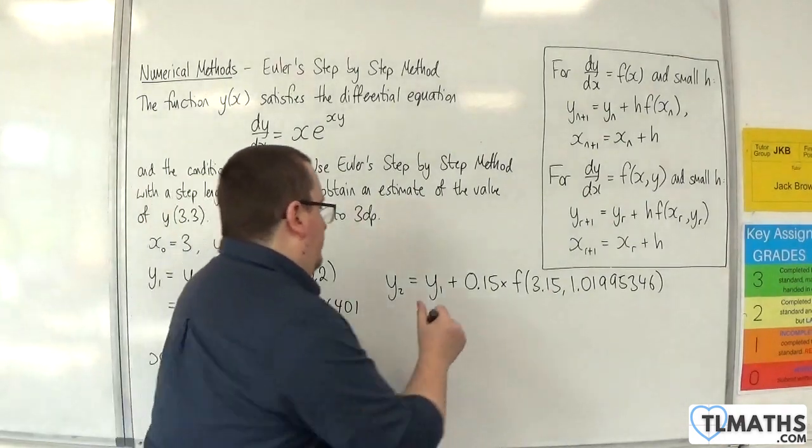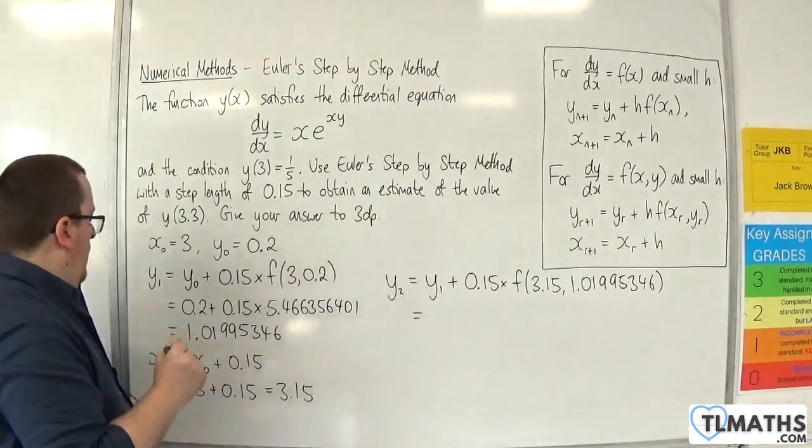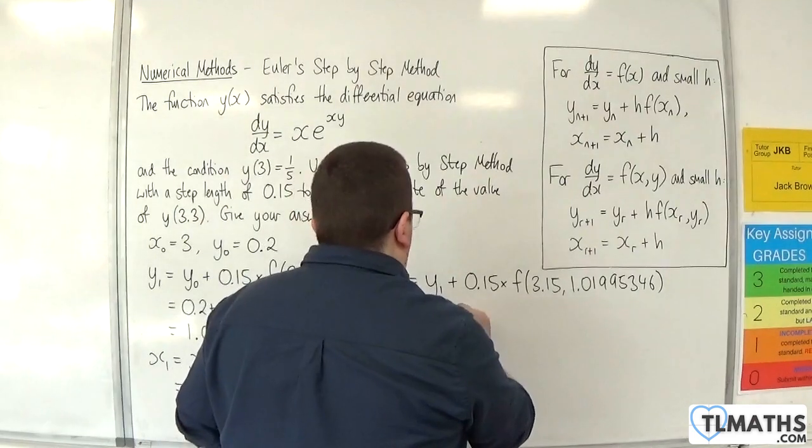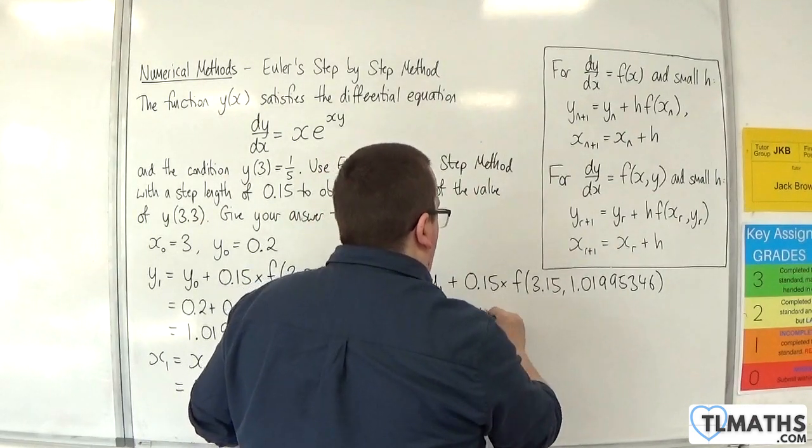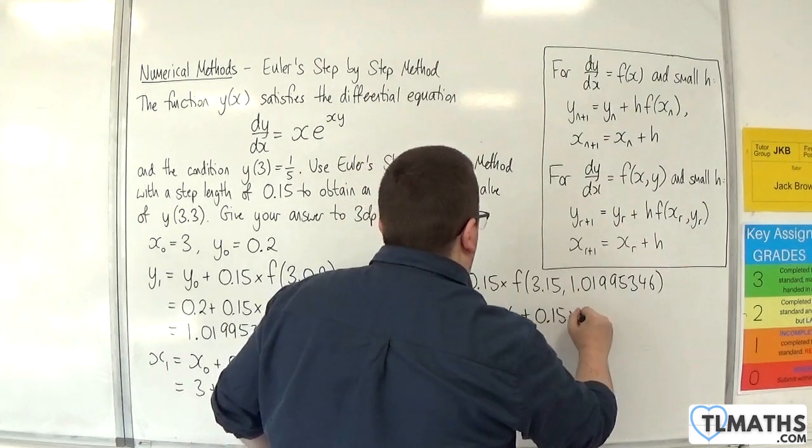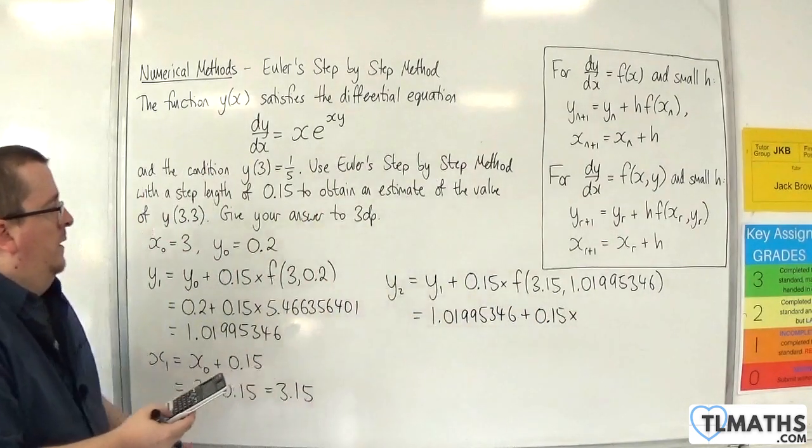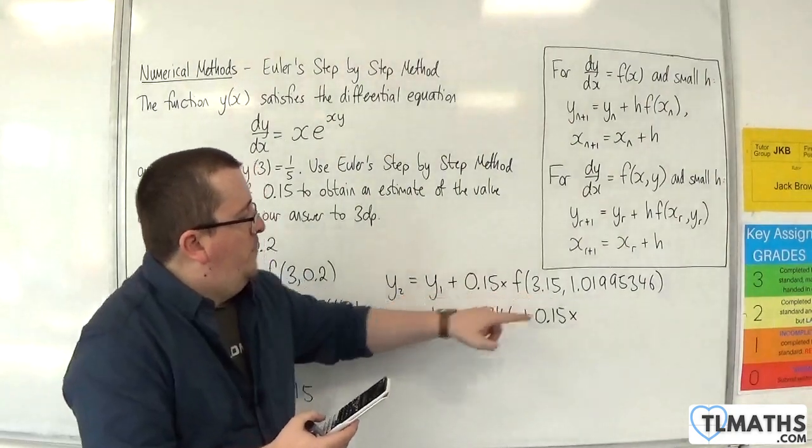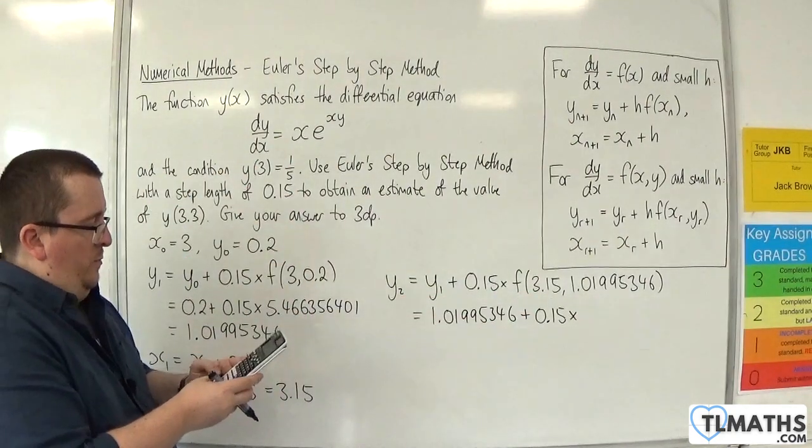So y₁ is that. So 1.01995346, plus 0.15 times by. So I've got 3.15, so that's the x₁, 3.15, times by e to the power of 3.15, times by 1.01995346.